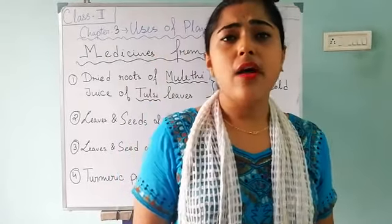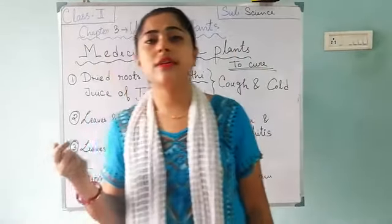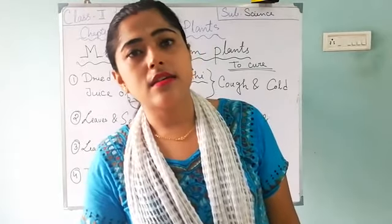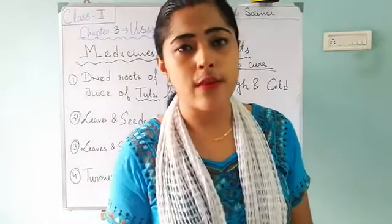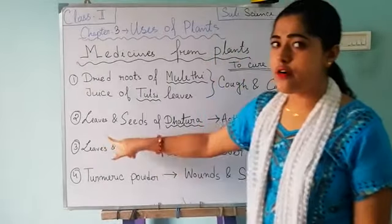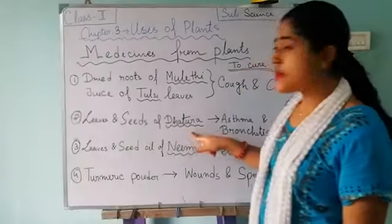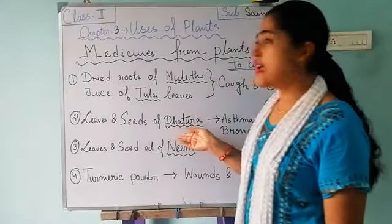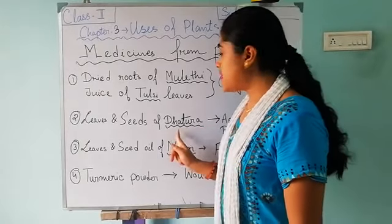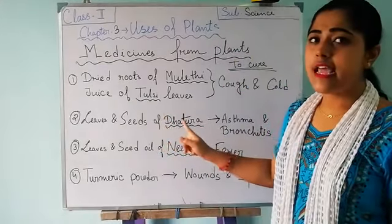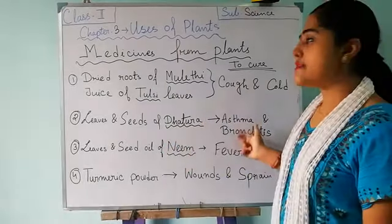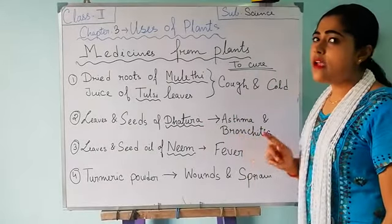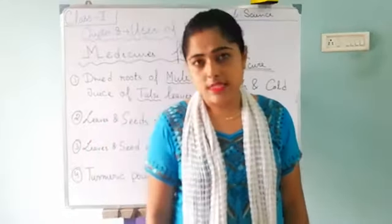The medicines from dhultura help us to cure asthma and bronchitis. These are two very dangerous diseases which occur in our lungs. The medicines made from the leaves and seeds of the dhultura tree cure asthma and bronchitis — the diseases of the lungs.